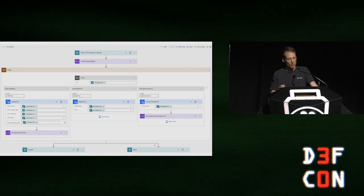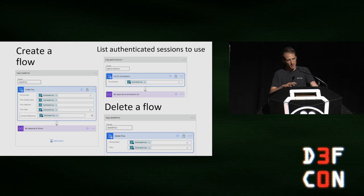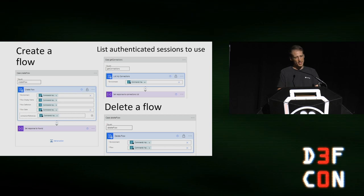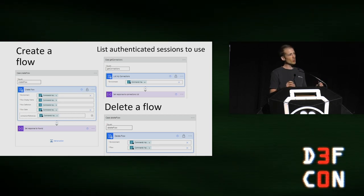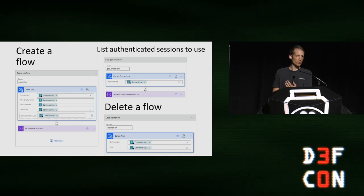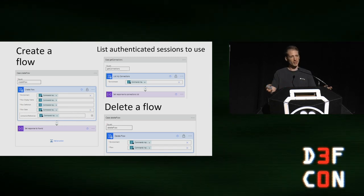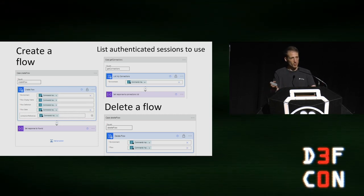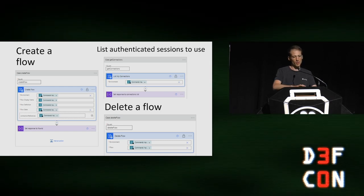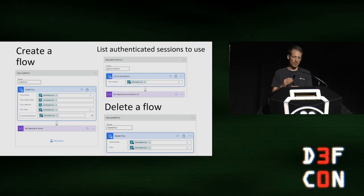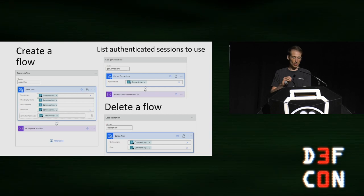By executing the flow and then deleting it, I leave completely no logs behind — because logs are maintained as part of the flow itself. The only trace is that this parent flow is running, and that can be hidden by disabling run history for it. This completely covers arbitrary payloads — I can run whatever I want.